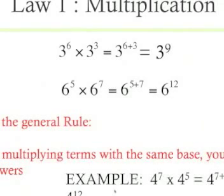In the example shown there, 4^7 times 4^5, the base is 4. The base is the same, so you can apply the index rule: 7 plus 5 equals 12, so the answer is 4^12. Remember, if the base is different, you cannot apply the index rule.